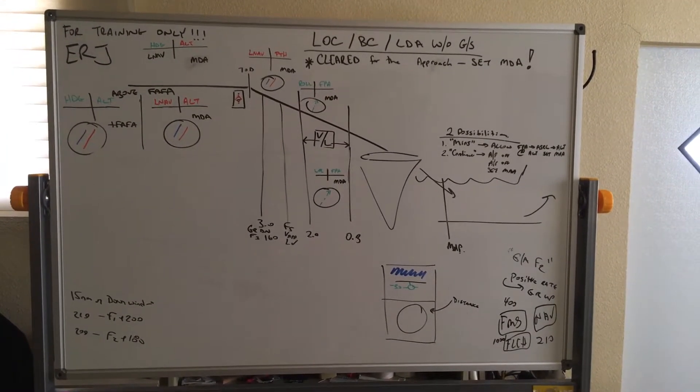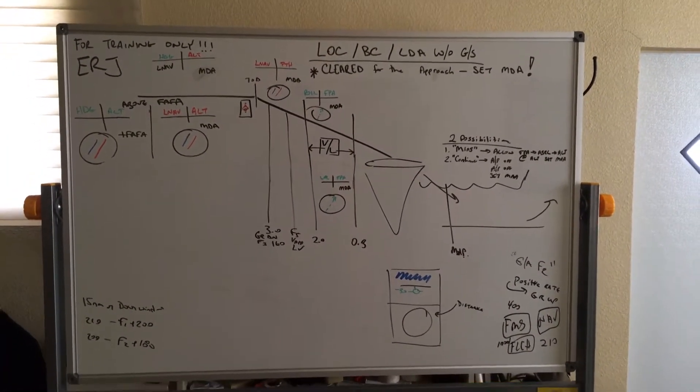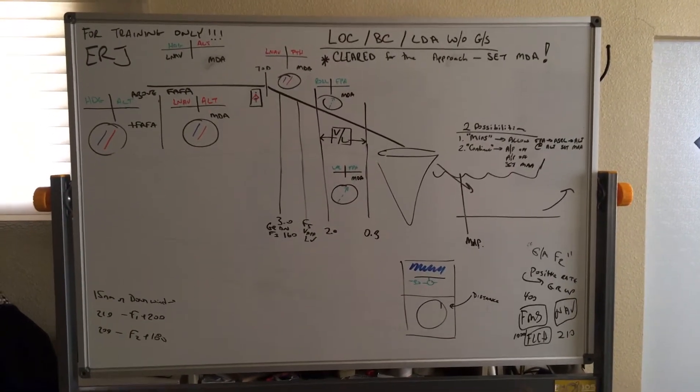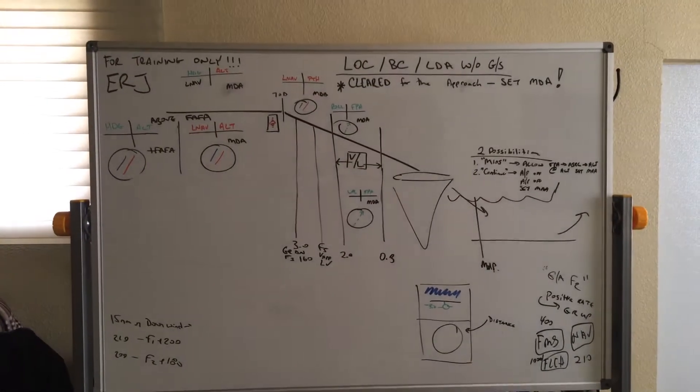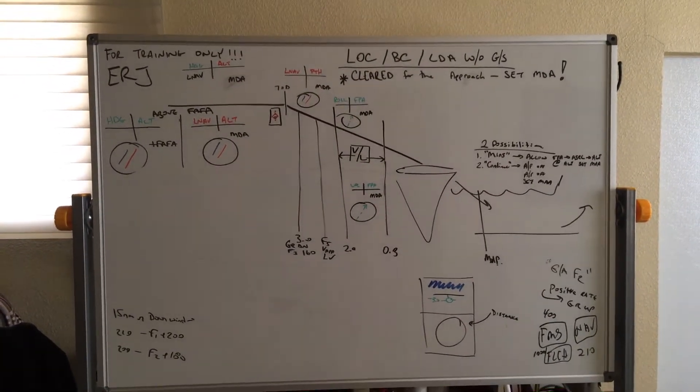Hello, this is for my current students that are still trying to sort things out. We'll be talking about the localizer approach, the back course approach, LDA without glide slope, and this will be a discussion from above the final approach fixed altitude.